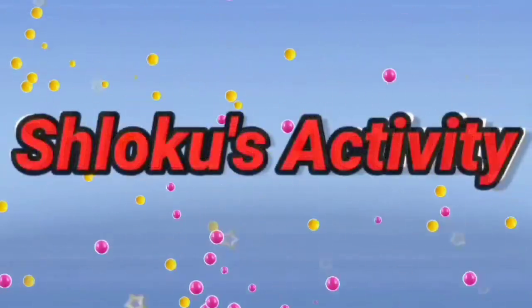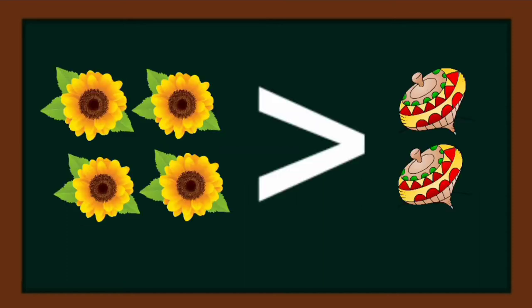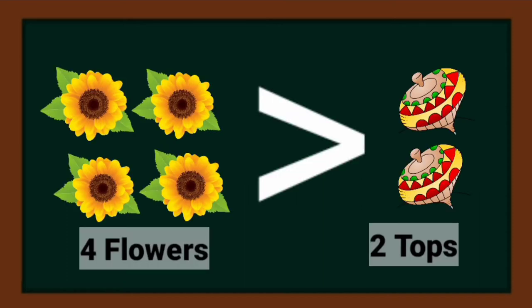We can see four flowers and two tops. We can say that the number of flowers is greater than the number of tops, or the number of tops is lesser than the number of flowers. We can represent this using this symbol.